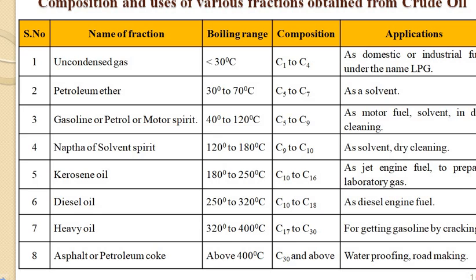Kerosene oil is obtained at about 180 to 250 degrees centigrade, consisting of C10 to C16 carbons, and is used as jet engine fuel and for preparing laboratory gas. Diesel oil is obtained as a fraction of 10 to 18 carbons at around 250 to 320 degrees centigrade and used as diesel engine fuel. Asphalt or petroleum coke is obtained above 400 degrees centigrade and is used for making waterproof sheets, roofing sheets, and road making.